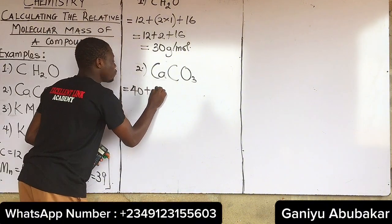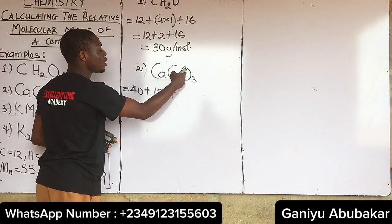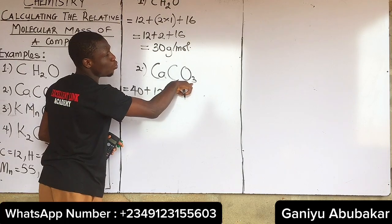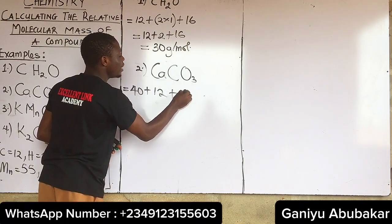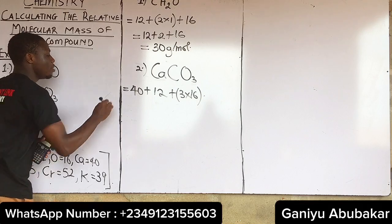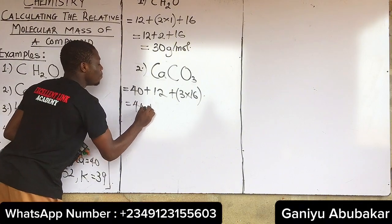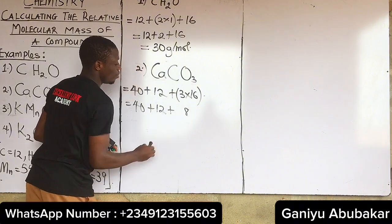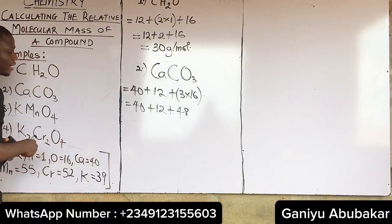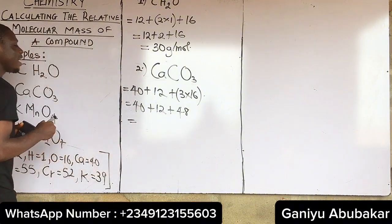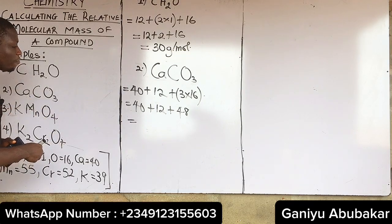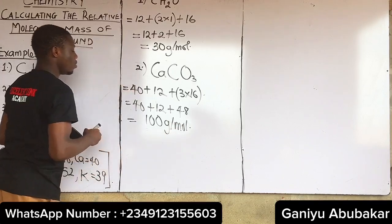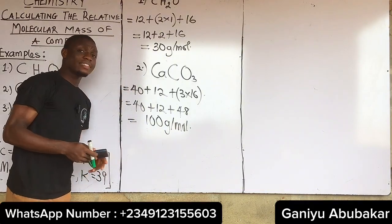Carbon is 12. Then we have oxygen — there are three oxygen atoms, so that's 3 × 16. The calculation is: 40 + 12 + (3 × 16) = 40 + 12 + 48 = 100 gram per mole. So the relative molecular mass of calcium carbonate is 100 g/mol.